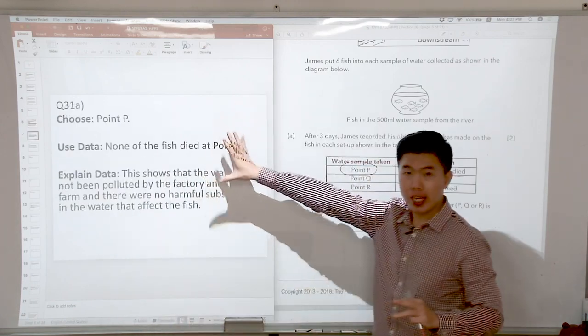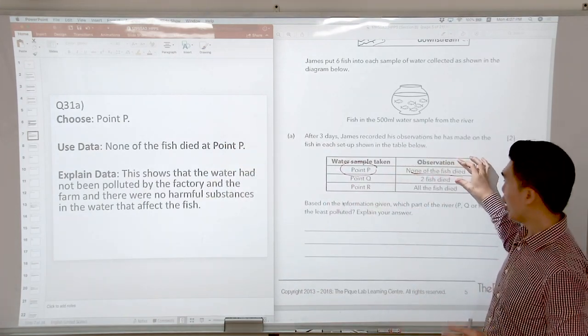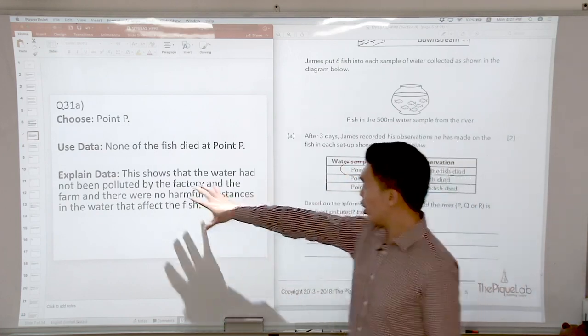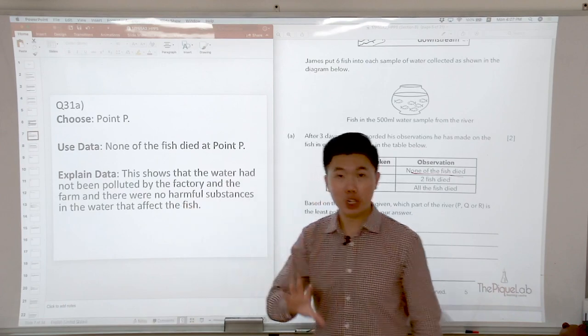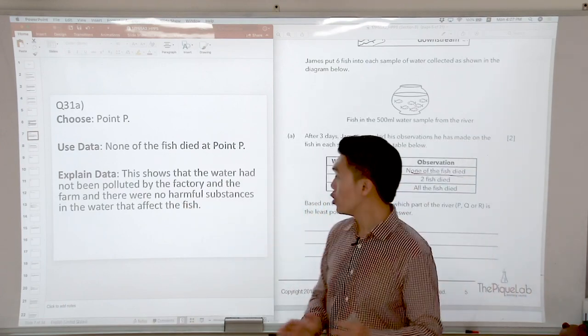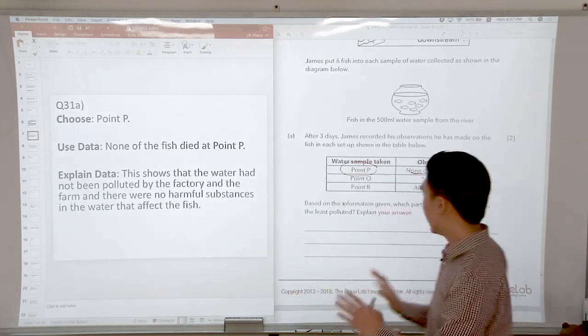I am going to choose point P. Using the data means using whatever they have given us in the question. So none of the fish died at point P. Now we will attempt to explain. So this shows that the water had not been polluted by the factory and the farm, and there were no harmful substances in the water that affected the fish, and therefore it survived.